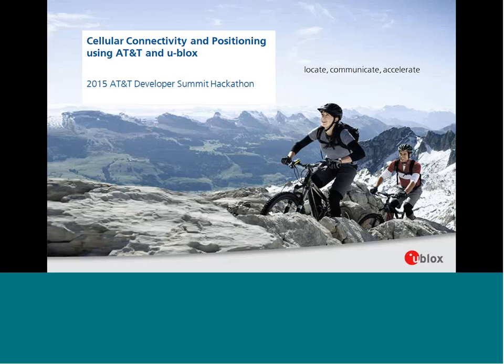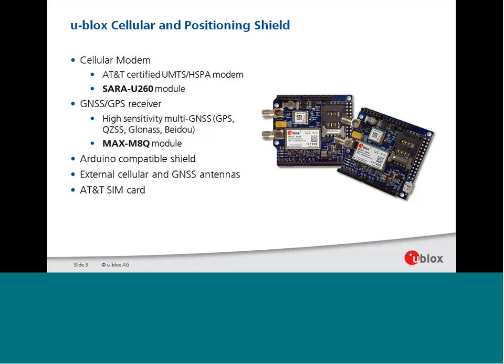My name is Michael Amann, I'm from uBlox. For this hackathon we are bringing a cellular connectivity and positioning shield. Our cellular and positioning shield contains an AT&T certified UMTS HSPA modem — a SARA module. In addition, the shield has a GNSS GPS receiver, a high-sensitivity multi-GNSS receiver that allows you to determine the position of your device using a MAX module. The shield is fully Arduino compatible with external antennas and AT&T SIM cards.